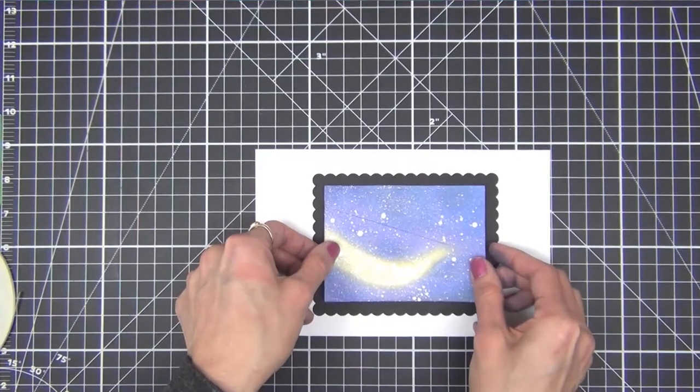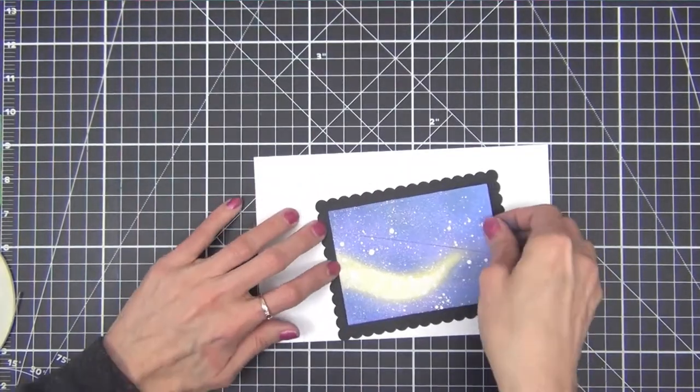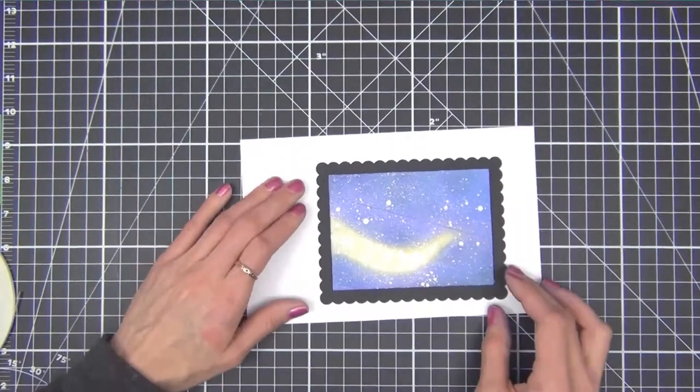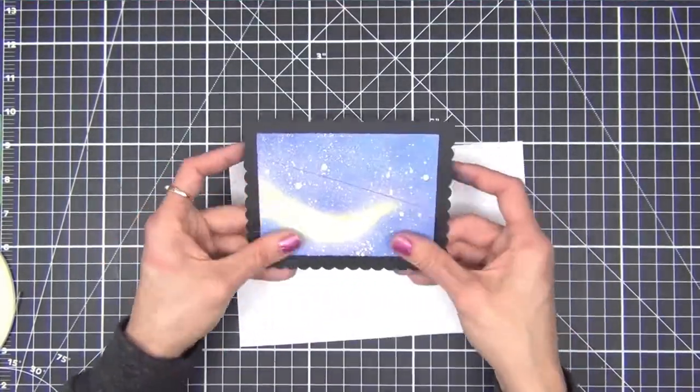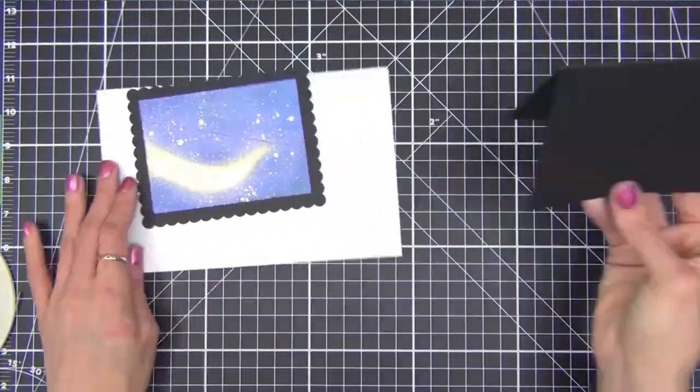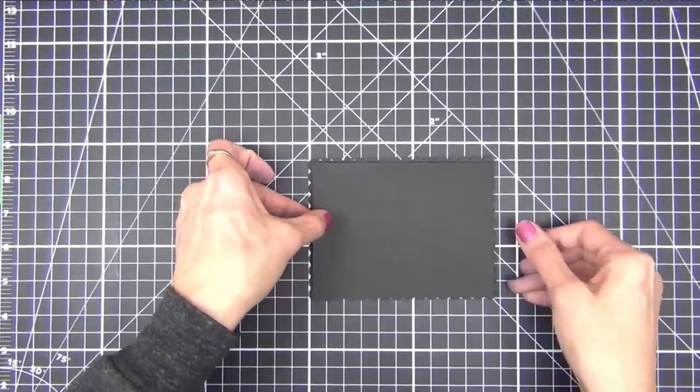I go ahead and adhere that to the scalloped panel and then I adhere the scalloped panel to a black folding note card that I trimmed to be a little smaller than the panel so it didn't peek out from behind the scallops.